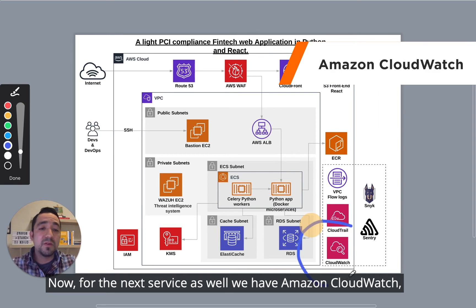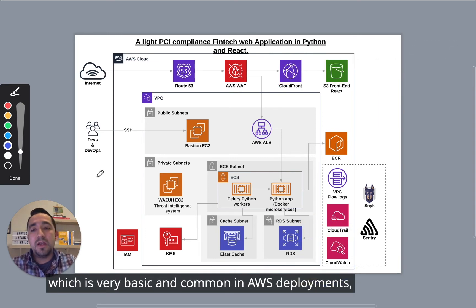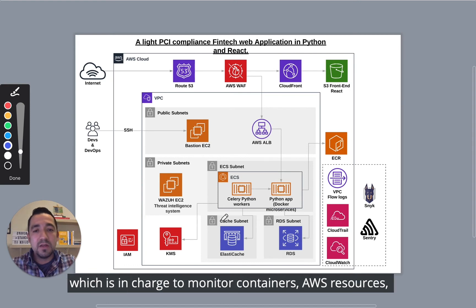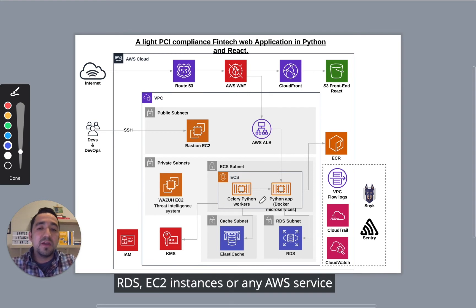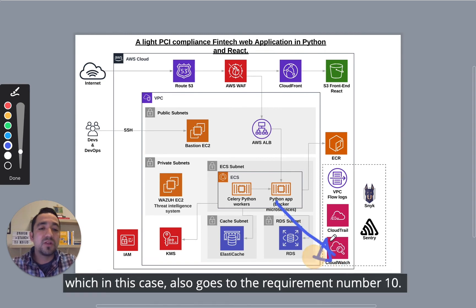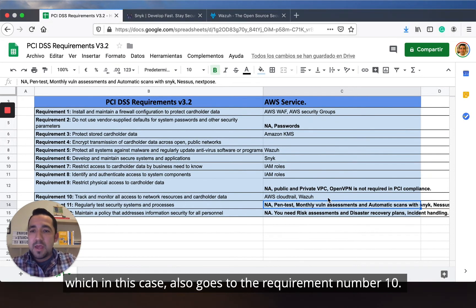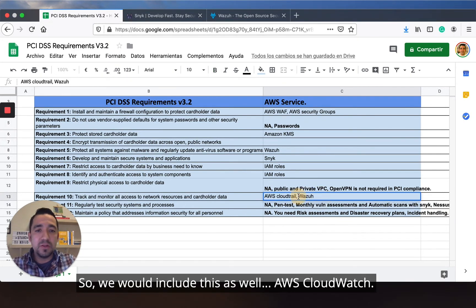We also have Amazon CloudWatch, which is very basic and common in AWS deployments. It is in charge of monitoring containers, AWS resources, RDS, EC2 instances — any AWS service can be monitored through Amazon CloudWatch. This also maps to requirement number ten, so we'll include it here as well.